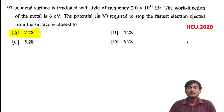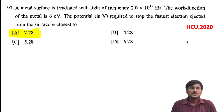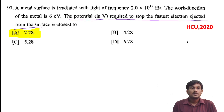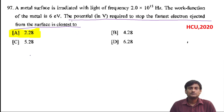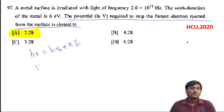A metal surface is irradiated with light of frequency 2.0 into 10 to the power 15 Hz. The work function of the metal is 6 electron volt. The potential required to stop the fastest electron ejected from the surface is close to. We have to find out the kinetic energy of the electron which is ejected. From the photoelectric effect: energy of radiation h·ν equals work function plus kinetic energy.